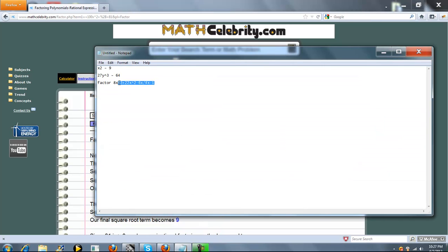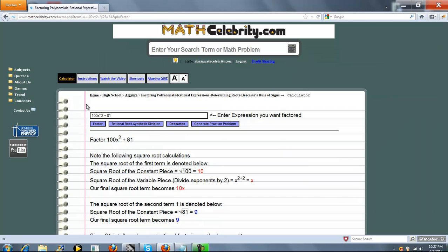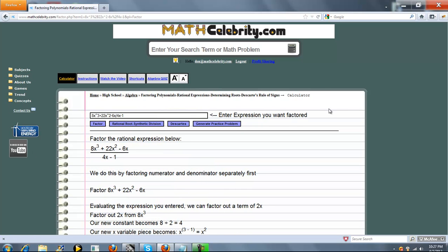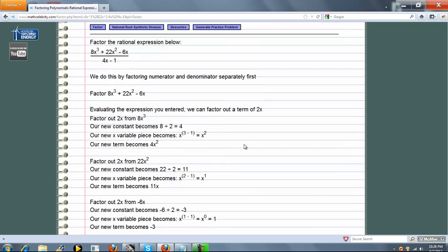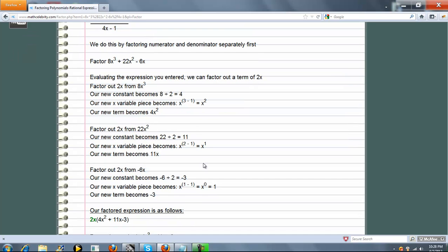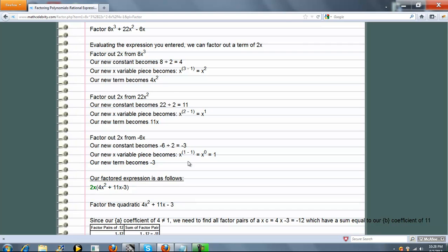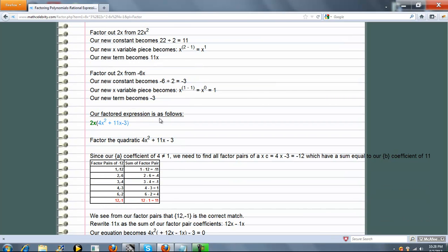Now we also have rational expressions as well. We'll go ahead and press factor. You can actually take one fraction and factor it if it's factorable. The first thing we do is factor the numerator. We're going to factor out a 2x from each term. When we do that, we have this left over.